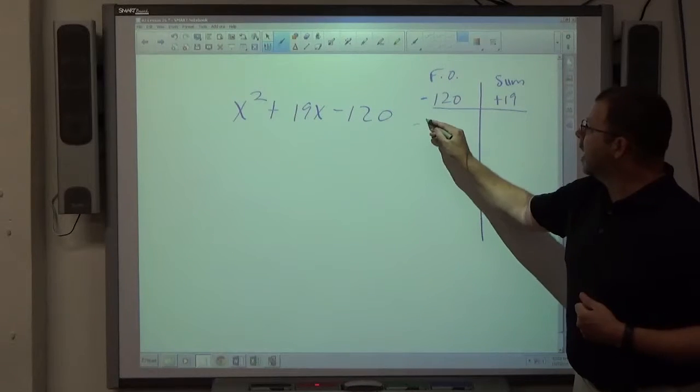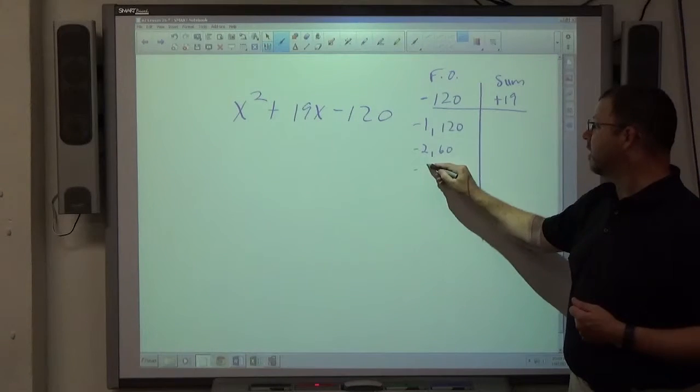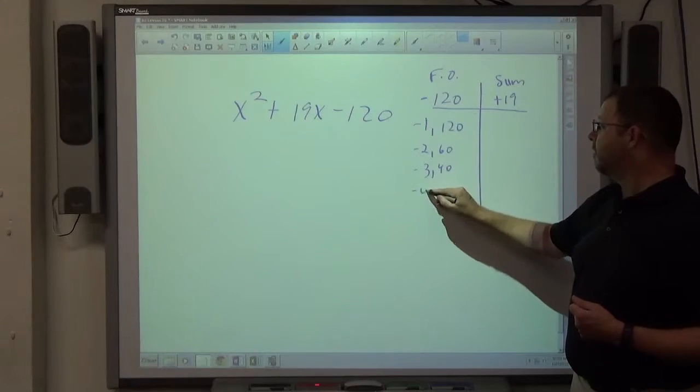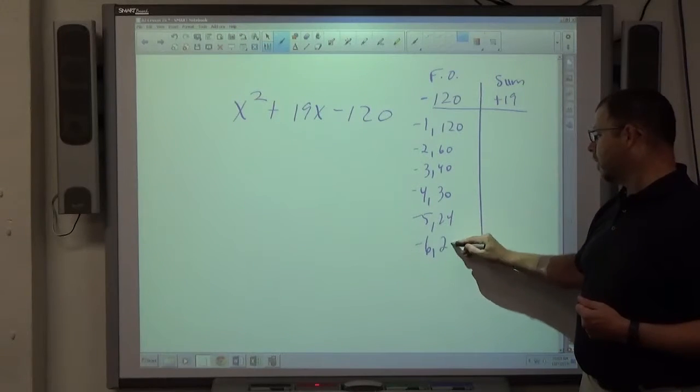So, -1 times 120, -2 times 60, -3 times 40, -4 times 30, -5 times 24.